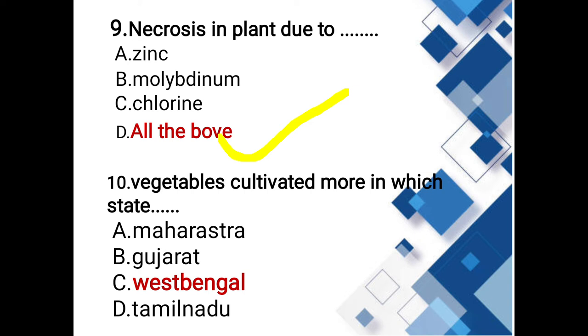Vegetables are cultivated more in which state? Options: Maharashtra, Gujarat, West Bengal, Tamil Nadu. The answer is West Bengal.